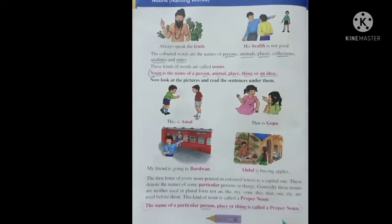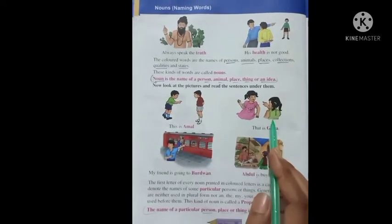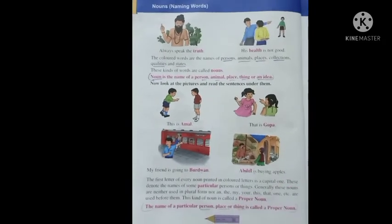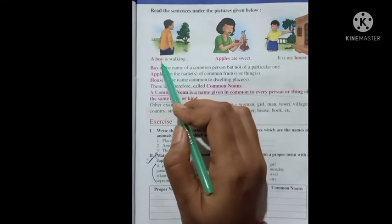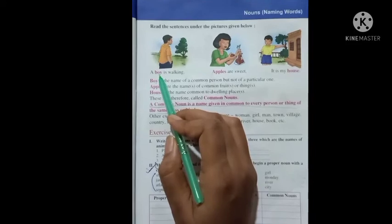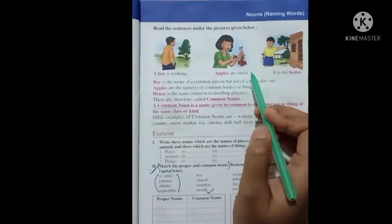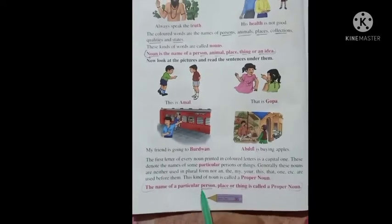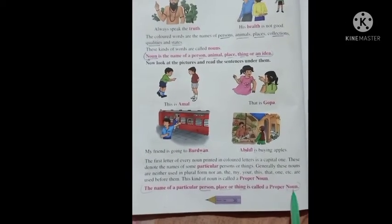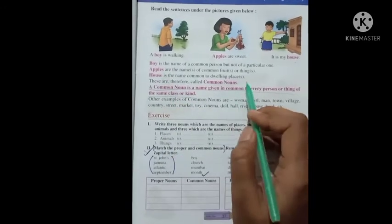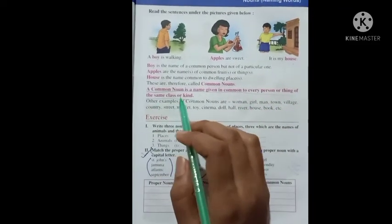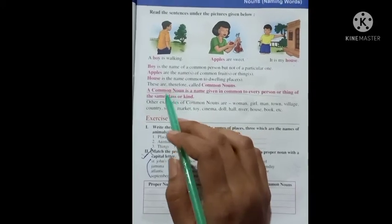A particular name is called a Proper Noun. And boy, girl, city, green grocer — these words are nouns, but these are not particular names; these are common. Such as: a boy is walking — he is a boy, but the particular name is not told, so boy is a common noun. Apples are sweet — apple is a common noun. It is my house — house is a common noun. The name of a particular person, place, or thing is called a Proper Noun. A common noun is a name given in common to every person or everything of the same class or kind.